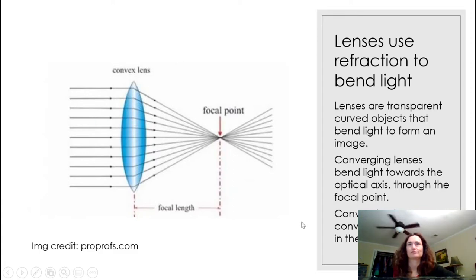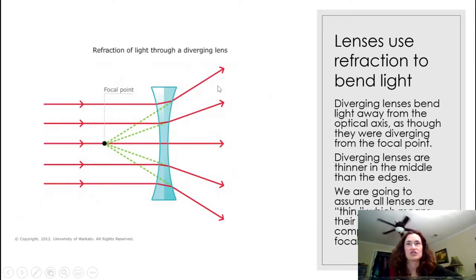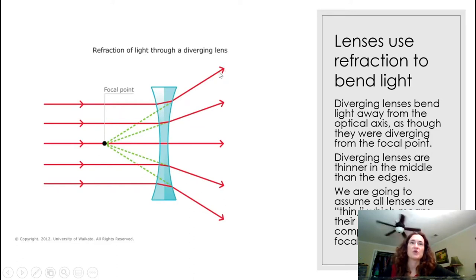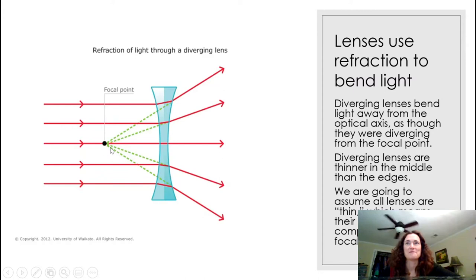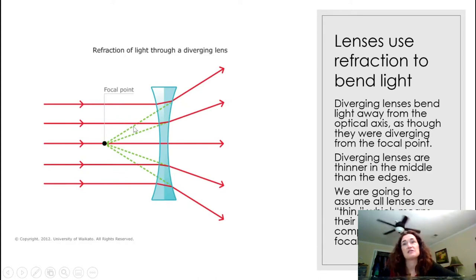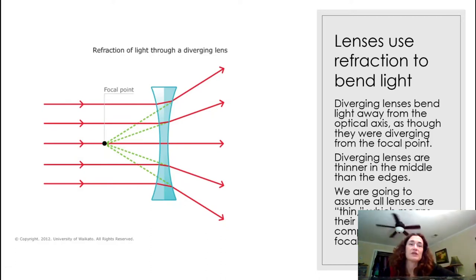The other main type is a diverging lens. Diverging lenses bend light away from the optical axis. If you trace the diverging rays on the far side of the lens back to a point, it looks like all those rays came from the focal point on the near side. Diverging lenses are concave — thinner in the middle than on the edges. We'll assume all lenses today are thin, meaning their thickness is small compared to their focal length.